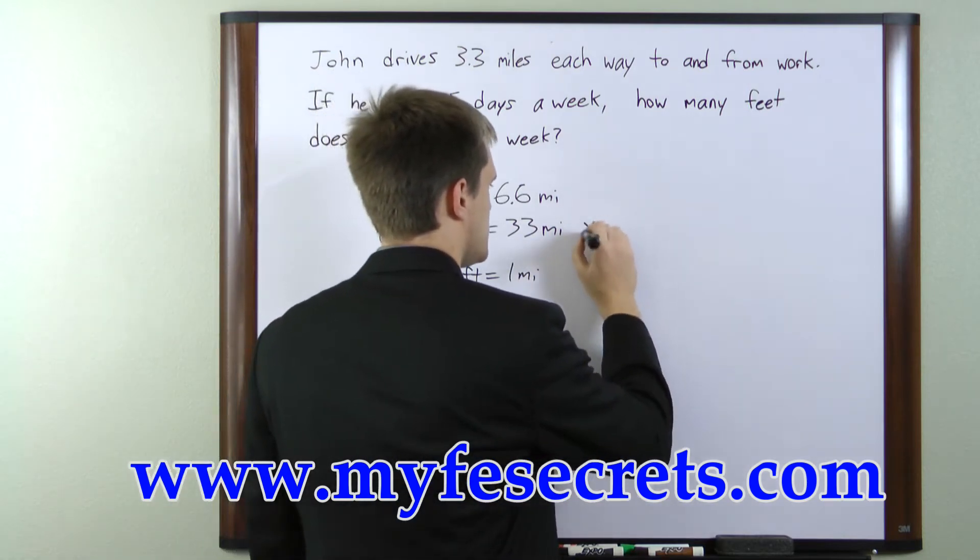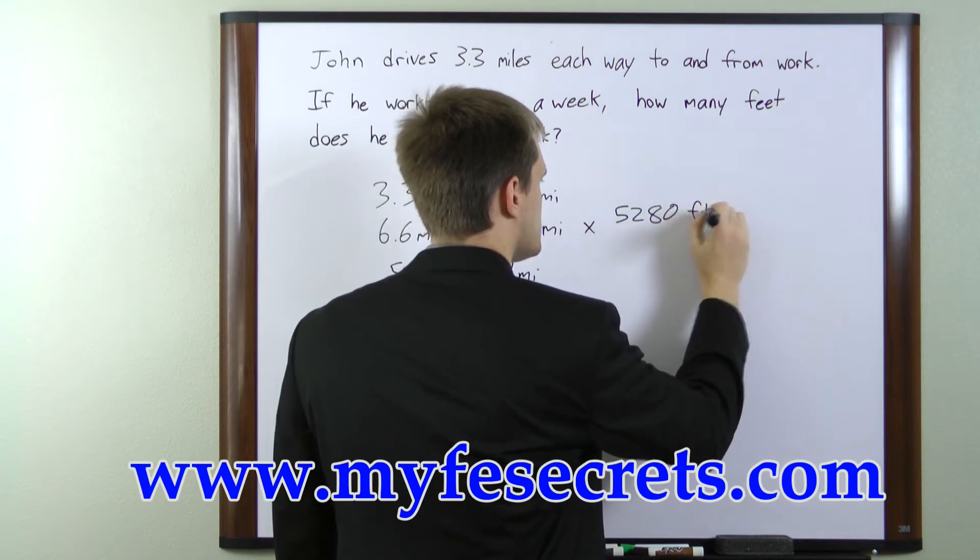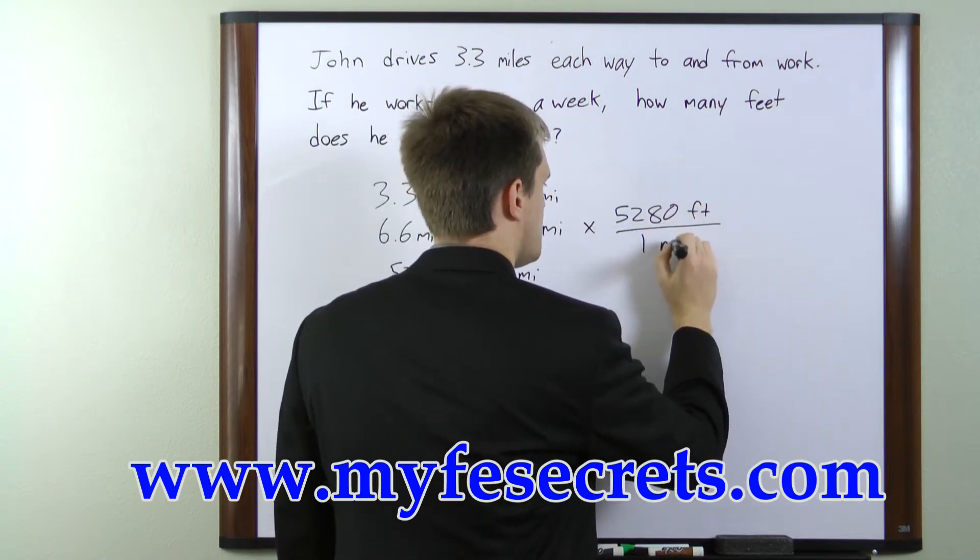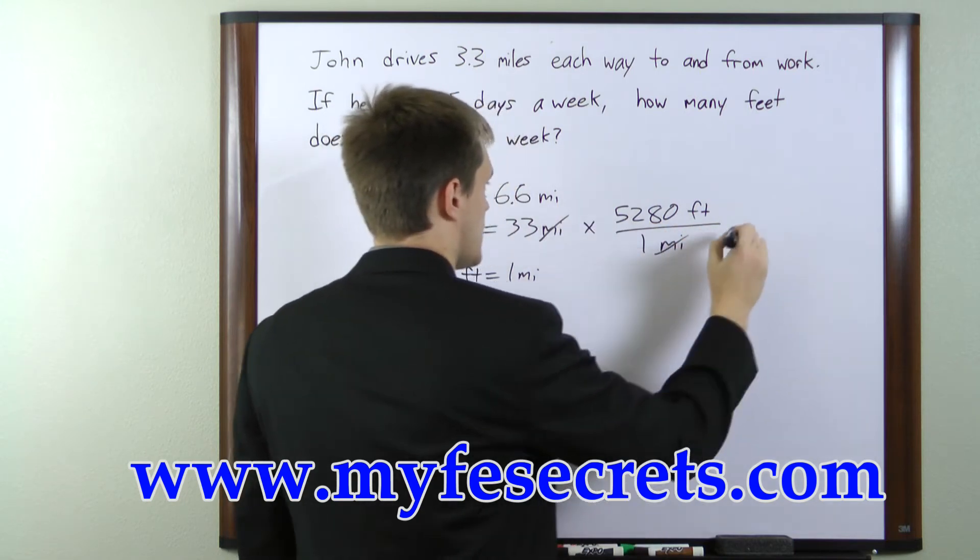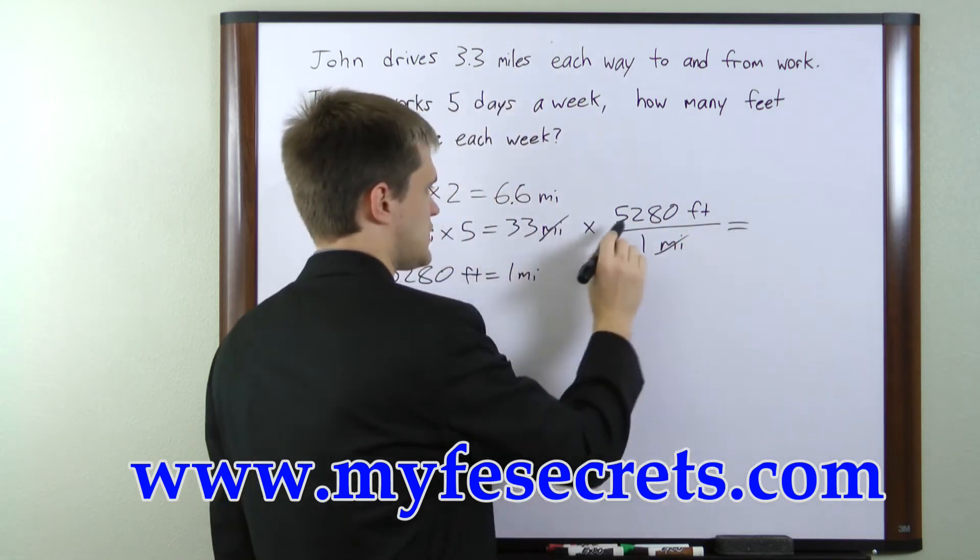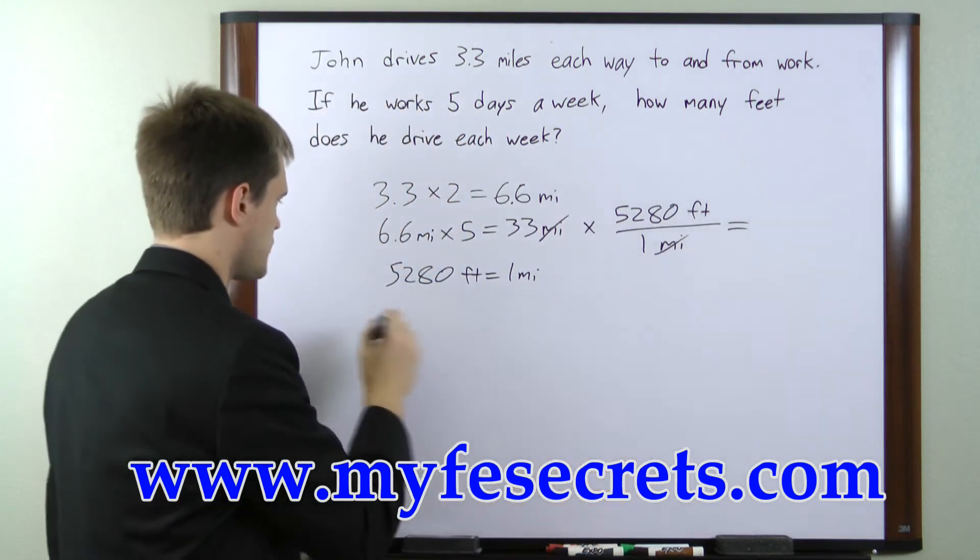So 33 miles times 5,280 feet per one mile. The miles cancel and we're left with 33 times 5,280 feet. So let's do that multiplication.